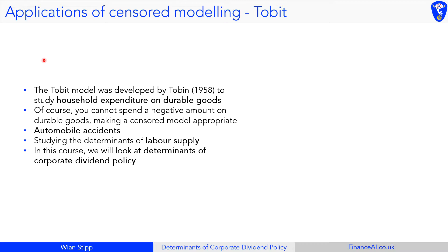When you look at all these examples, the censored value is typically zero — nothing can lie below zero. But there are other examples where the censored value is higher or lower. For example, minimum wage laws: if there's a law saying you can't pay employees less than ten dollars an hour, then nothing will be below ten dollars an hour and the censored value will be ten. We'll keep it general and call the censored value c.